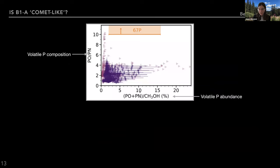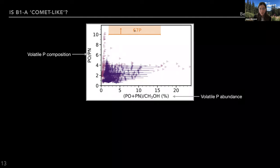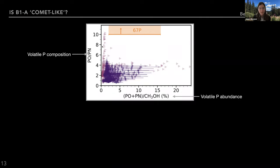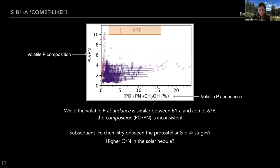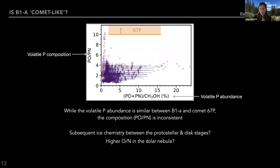Is B1-A comet-like then? While the volatile phosphorus abundance — parameterized by PO + PN over methanol — seems quite similar between B1-A and comet 67P, the volatile phosphorus composition looks quite different. We see a much lower PO-to-PN ratio in B1-A compared to the lower limit inferred for comet 67P. It's still unclear exactly what causes this distinct composition. It's possible there is subsequent ice chemistry between the protostellar and disk stages reshuffling the main volatile phosphorus carrier, or that the solar nebula had a higher oxygen-to-nitrogen elemental abundance than B1-A. More observations of more protostars are really needed.